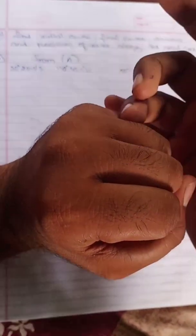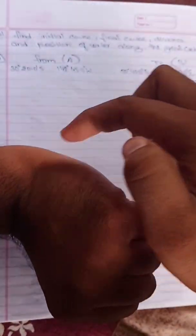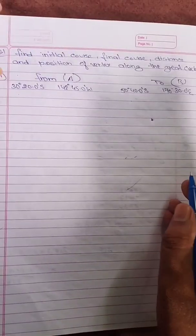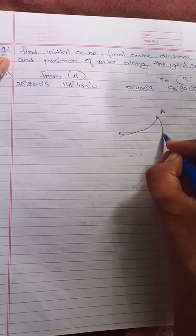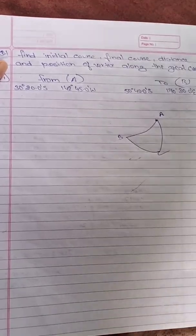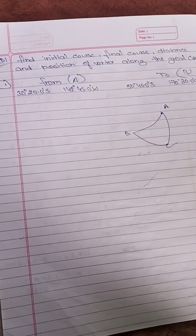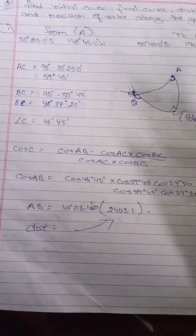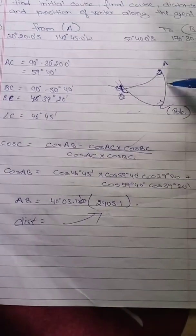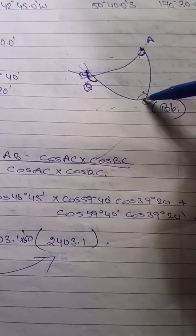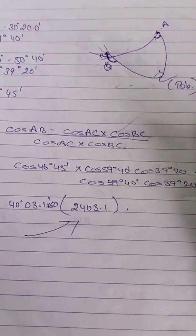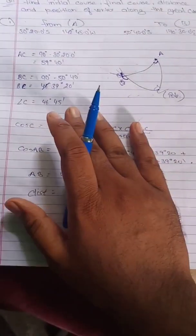Considering the globe with the Greenwich meridian, the 180-degree meridian lies on the other side. If we face the back side of the globe toward us, we see the track goes this way — so from point A to B we draw the vertex in this direction, and point C is our pole. Now let's solve the numerical.